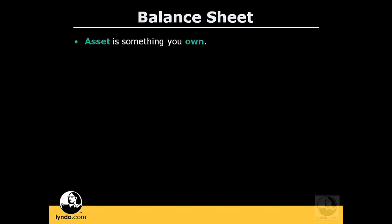An asset is something that the business owns. Some examples of assets you might find on a balance sheet: cash you have in your checking account, accounts receivable — which is the money that your customers owe you — and inventory of the products that you sell, or equipment that you own.